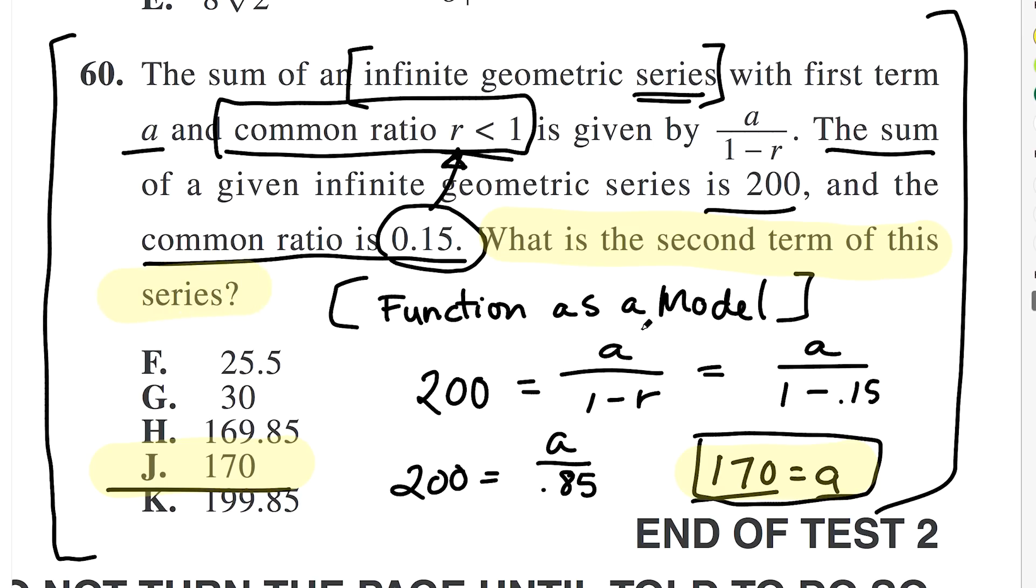What we actually want is the second term of the sequence. Guess what A is? A is the first term. So then in order to get the second term, you actually have to know the definition of a geometric series. If you don't know that or forgot it, you are screwed. So I'm going to review with you what a geometric series is.